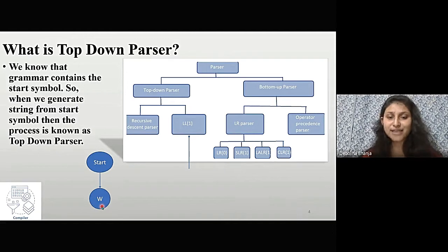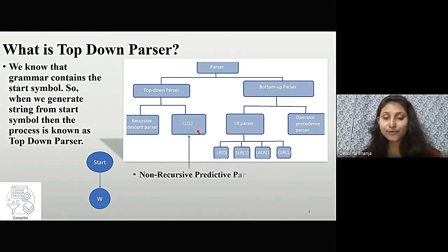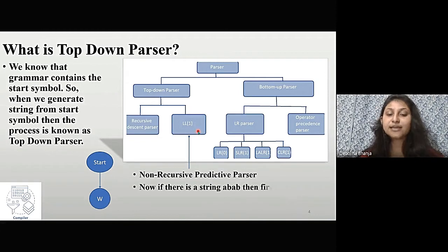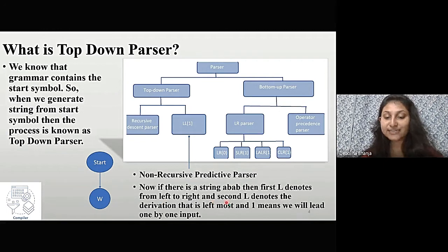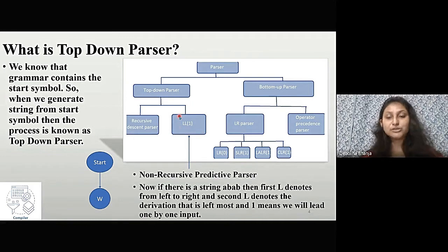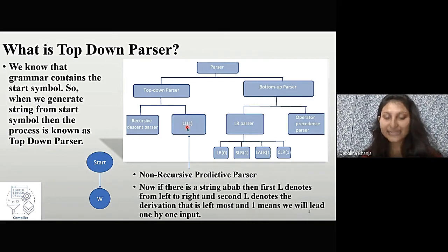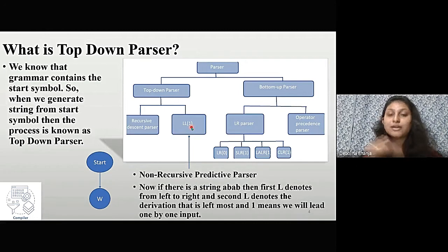Top-down parsing has two types: one is recursive descent parser and another is LL1 parser, also known as non-recursive predictive parser. For a string like ABAB, the first L denotes scanning from left to right, the second L denotes the leftmost derivation, and 1 means we read the input one symbol at a time. So the first L means the grammar moves left to right and the second L denotes the type of derivation — either rightmost or leftmost.